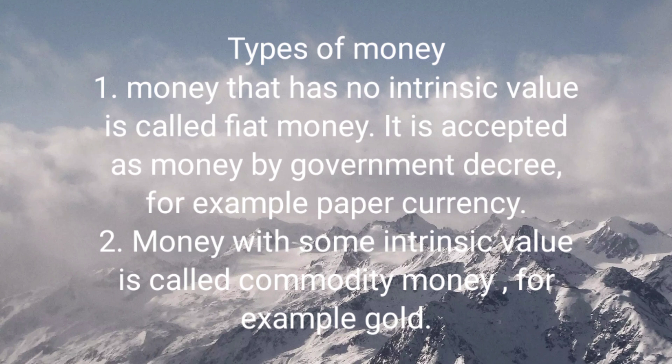Our next topic is types of money. Primarily, there are two types: fiat money and commodity money. Fiat means command, so fiat money is accepted as money because the government says so—it is accepted by government decree. For example, a 2000 rupee note. It has no intrinsic value. Money with some intrinsic value is called commodity money, for example, gold, which can be used for dental filling, jewelry, and other purposes.